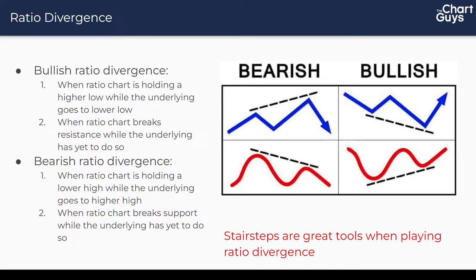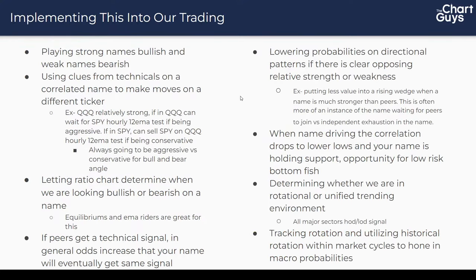How do we implement this into our trading? The simple approach: playing strong names bullish, weak names bearish. Another way is using clues from the technicals on a correlated name to make moves on a different ticker. Example: if QQQ has relative strength and you're in QQQ playing an hourly oversold bounce, you could be aggressive — instead of targeting QQQ's hourly 12 EMA, wait for SPY to get to its hourly 12 EMA, which would have QQQ getting well above its own hourly 12 EMA.